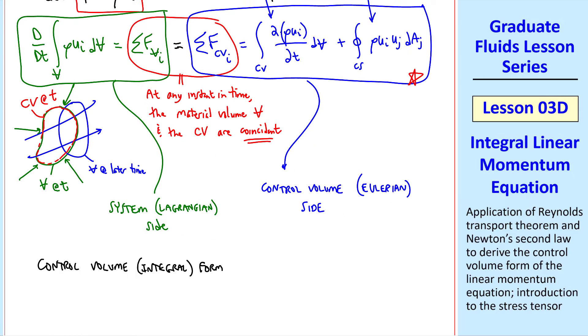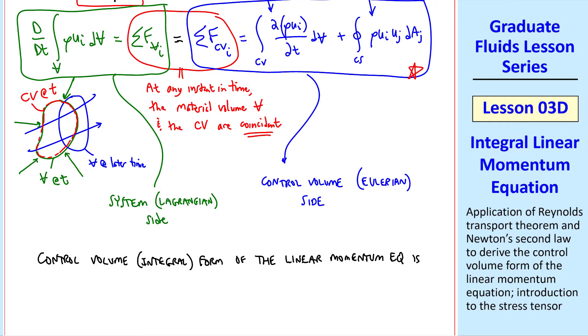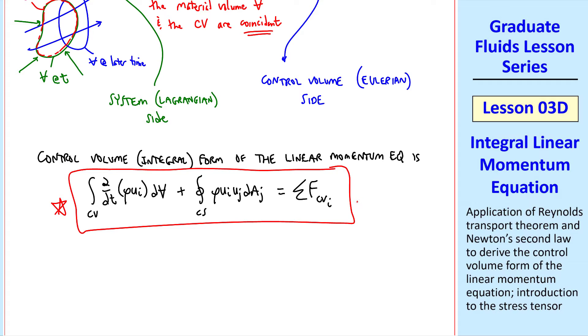I rewrite it here. The control volume or integral form of the linear momentum equation is the part we encircled in blue here. But fluid mechanicians like to write force on the right hand side of the equation. So the form that we'll commonly use has the left and right sides switched, as I rewrote here. This, then, is the equation that we'll call the control volume form of the linear momentum equation.